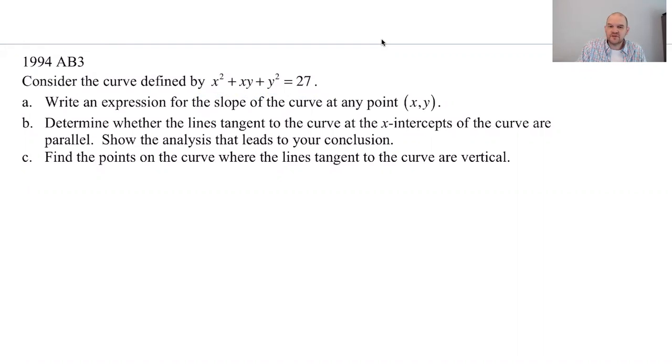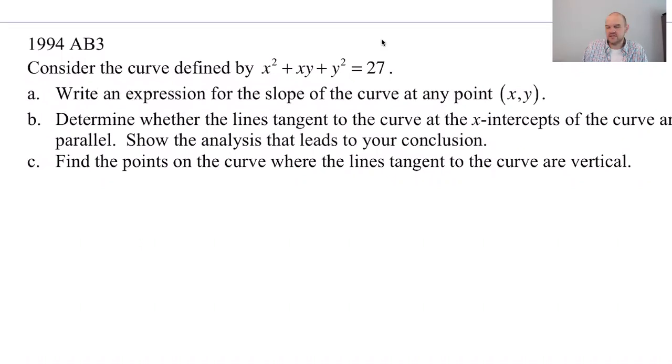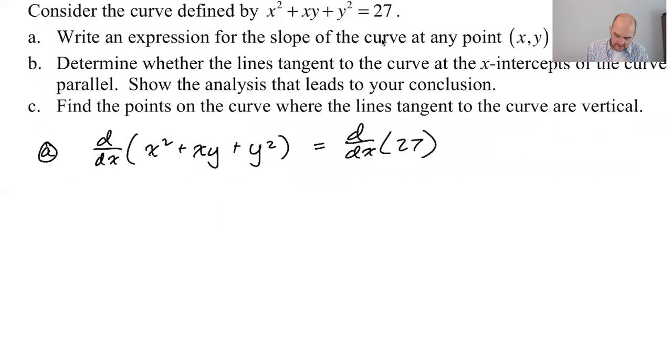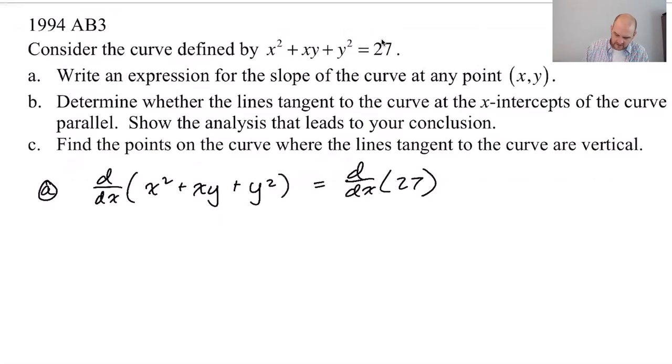Part A, write an expression for the slope of the curve at any point (x, y). A more modern version of this would be like show that dy/dx equals a particular thing, because if B and C are going to depend on A, you better get A right. So we're going to take the derivative of this side with respect to x, and the derivative of this side with respect to x. I think you should show this step because it will save you from making a mistake, forgetting to take the derivative of a constant and get zero. Word of warning on this one right there: that's a product, so we need the product rule. That's really the only warning.